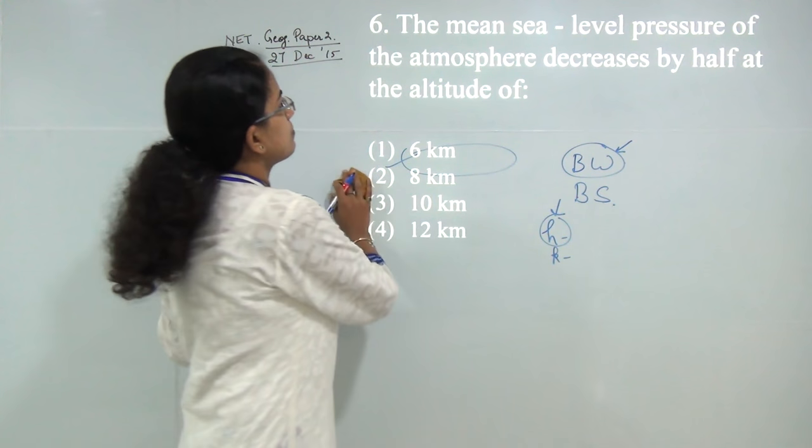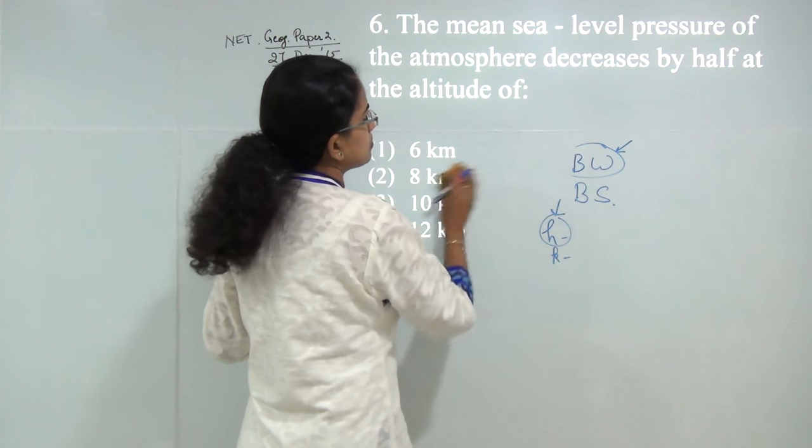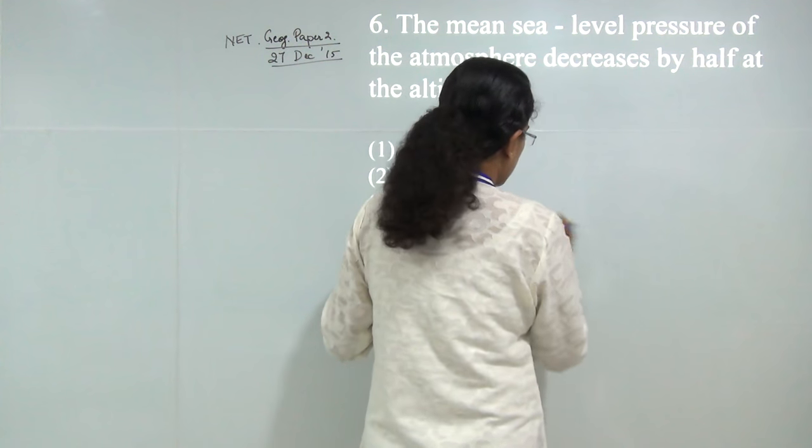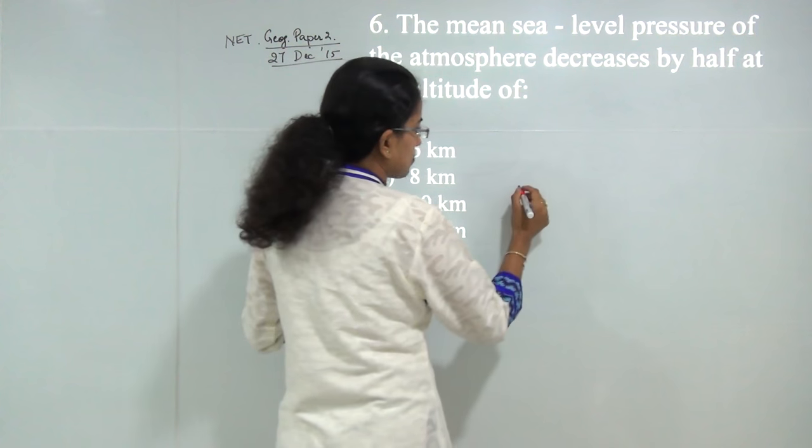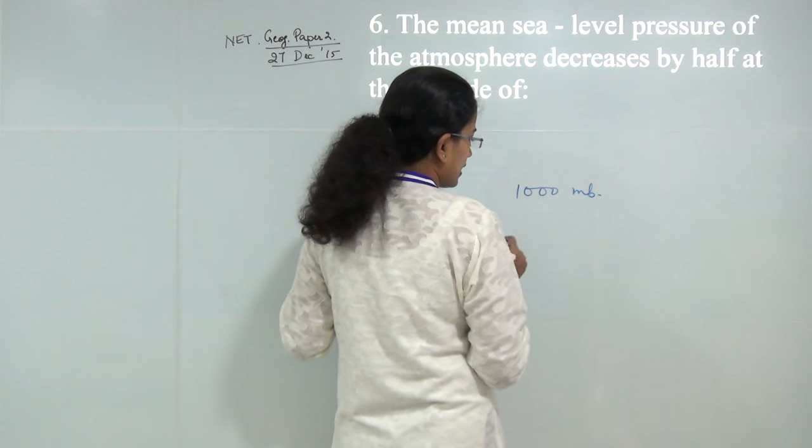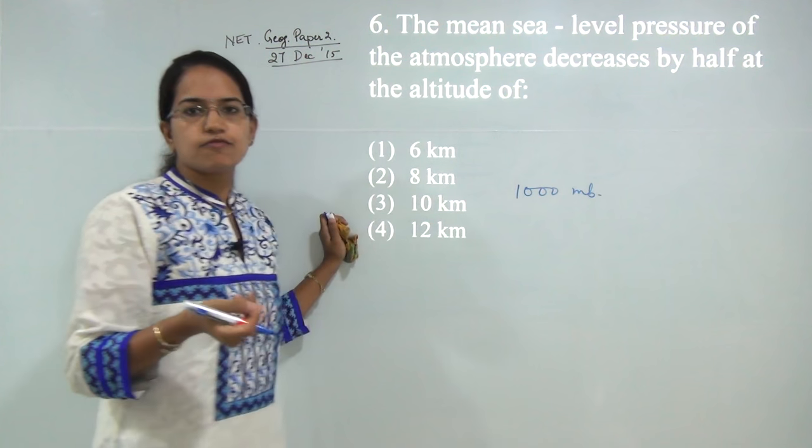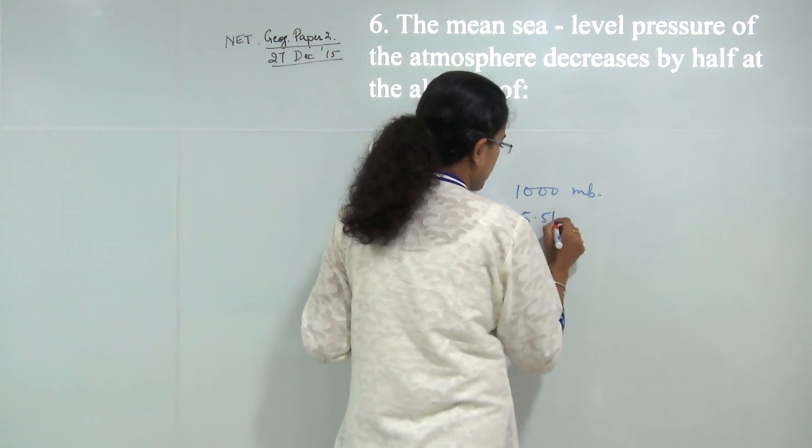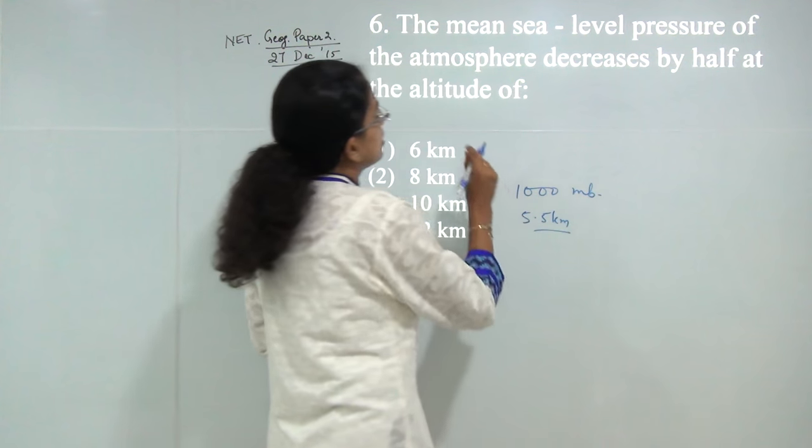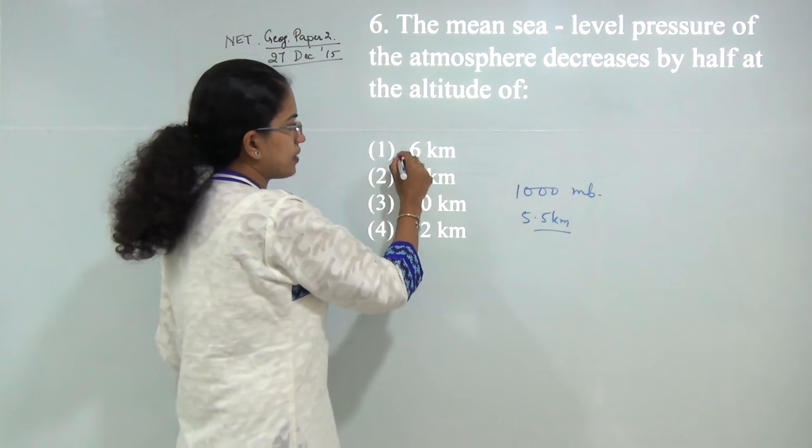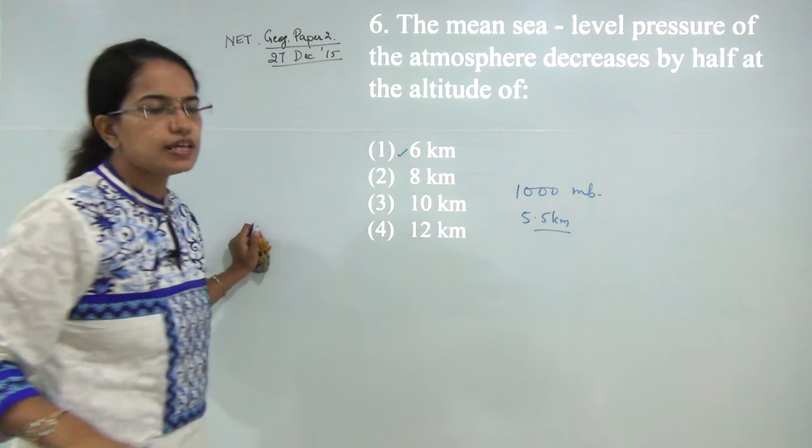Next question: the mean sea pressure of the atmosphere decreases by half at the altitude of? At mean sea level the atmospheric pressure is 1000 mb and it decreases at a rate of 1 mb for every 100 meters of ascent. At around 5.5 kilometers it would be half. The nearest to 5.5 here is 6, so the answer is 6.